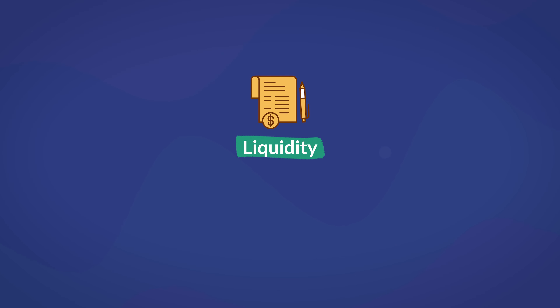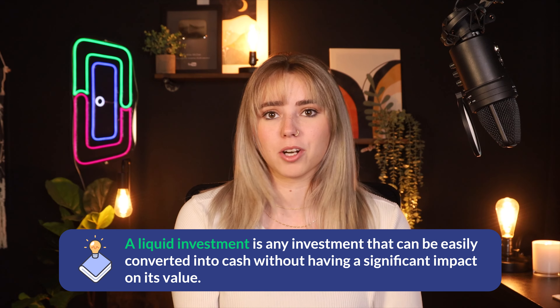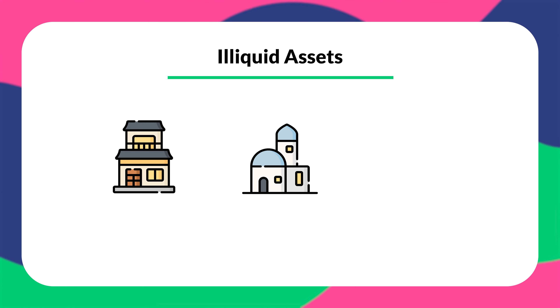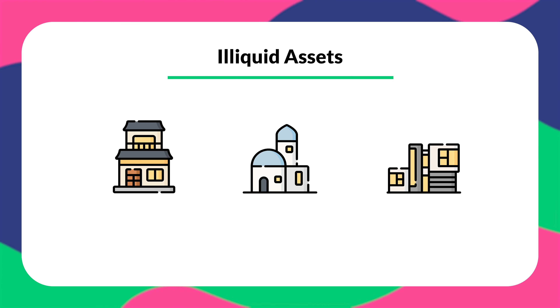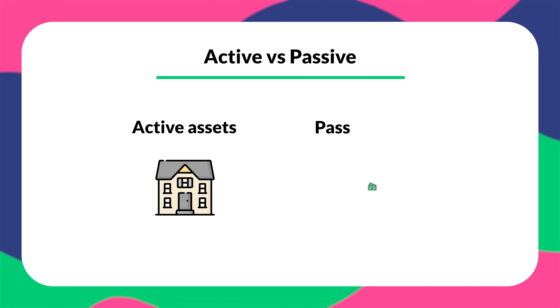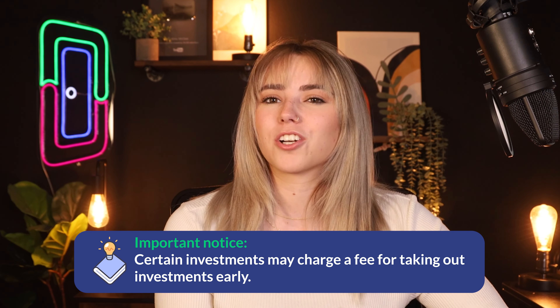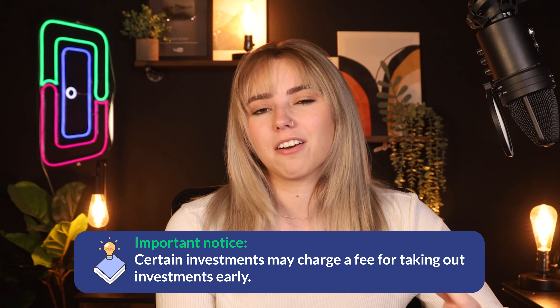Liquidity is the ability of an asset to be liquidated or sold back to the market. Most real estate investments like residential or commercial properties are known as illiquid assets because selling properties is not necessarily easy and can take months. In contrast, most passive investments are easy to liquidate because they remain in the form of cash, and investors can take out their money whenever they want, though certain investments may charge a fee for withdrawing early.